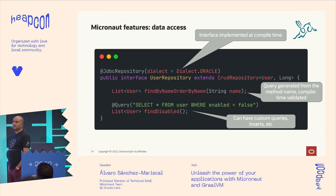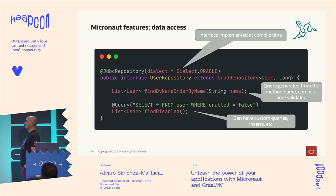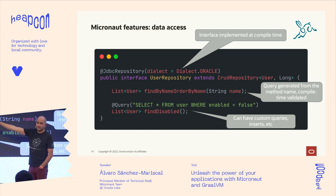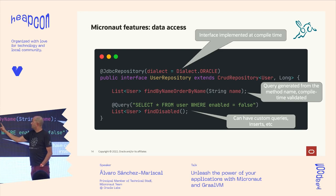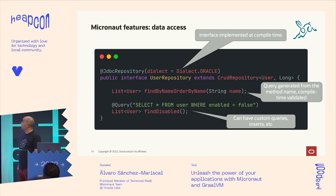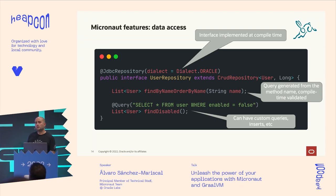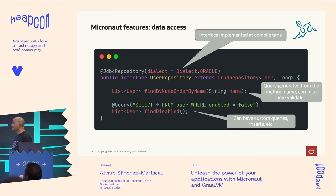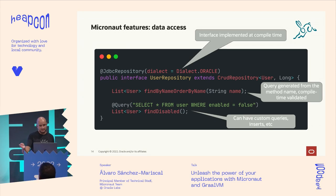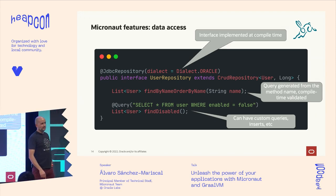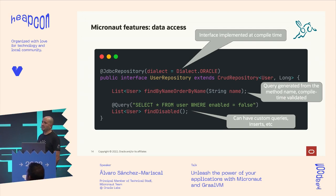So it knows it's a query — 'Name' is expected to be an attribute of the user class, and there are operators you can use like 'order by'. Another great thing: if there's no 'name' attribute in the user class, you'll get a compile error. If you have a typo in the method name, you also get a compile error. It's compile-time checked, which is much better than finding an error at runtime. You can also have custom queries if the generated ones aren't enough.